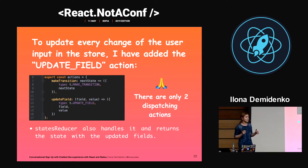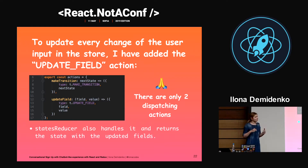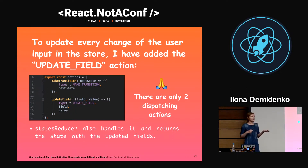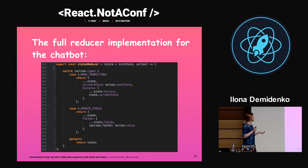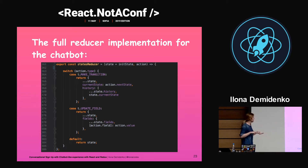As soon as we start asking the user to enter data, we also need to update the field on input change. That's why we need another action called update-field, with two arguments: field, which is the key of the input, and value, which is the value provided by the user. At the end we have only two dispatching actions — and that's very clean. In the reducer, we handle update-field by updating the corresponding field with the value provided by the user.